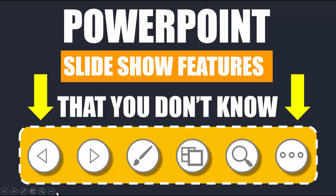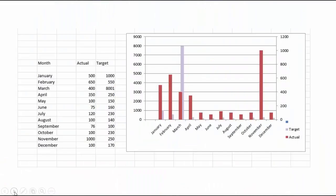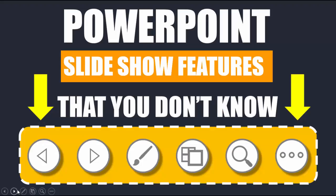Now what are these six features? The first one is the previous slide and the next one is the next slide. For example, if I want to go to the next slide I can simply click here, or if I want to go to the previous slide I can simply click here. This is the normal navigation — not extraordinary — but the third option is a very good one.